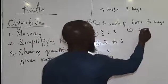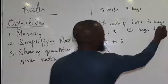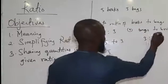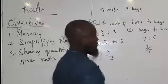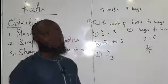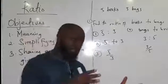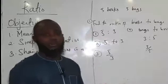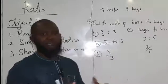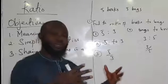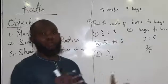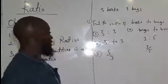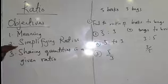But if it comes the other way — the ratio of bags to books — how many bags do we have? 3 bags. It will be 3 to 5, or 3 over 5. I hope this is clear. That's the meaning of ratio — we are comparing the sizes of quantities of items. So that is the meaning of ratio. Then we move to simplifying ratio.